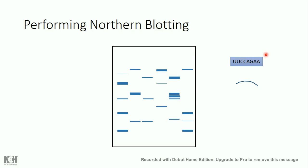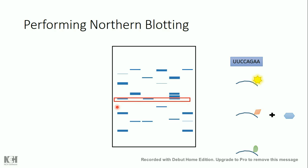Then I can apply the probe, which here is an RNA sequence with uracil instead of thymine. The probe should be coupled with either a fluorescent, a chemoluminescent using an enzyme, or a chromogenic dye — the same as in southern blotting. This probe detects the sequence of interest and binds to it. Then I visualize the membrane in a dark chamber, see how much RNA I have for this sequence, and determine if this gene is expressed, over-expressed, or not expressed.